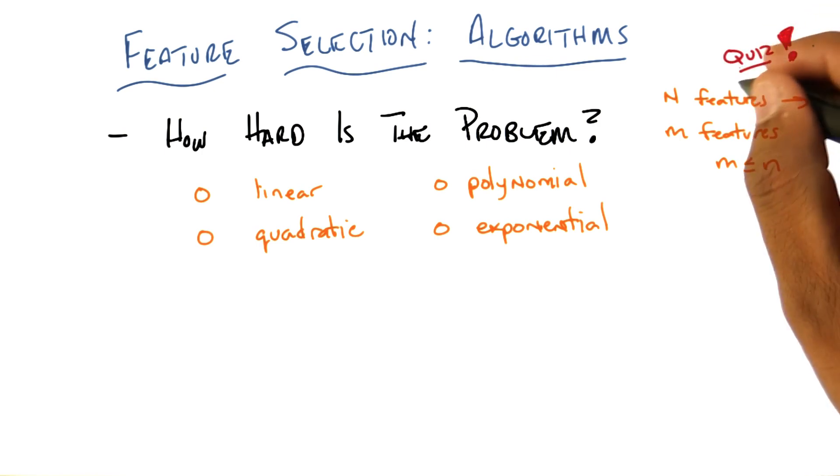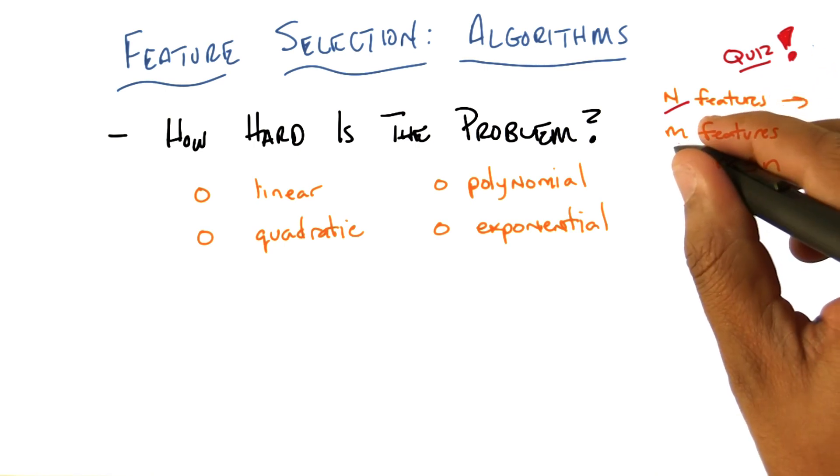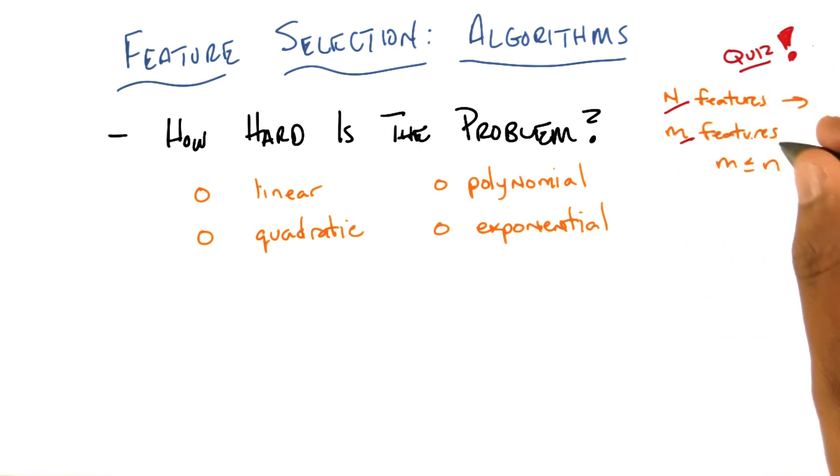You've got a set of data with n features. And your goal is to find a subset of m features, where the size of that subset is no greater than the original set of features n, which makes sense. And that's it.